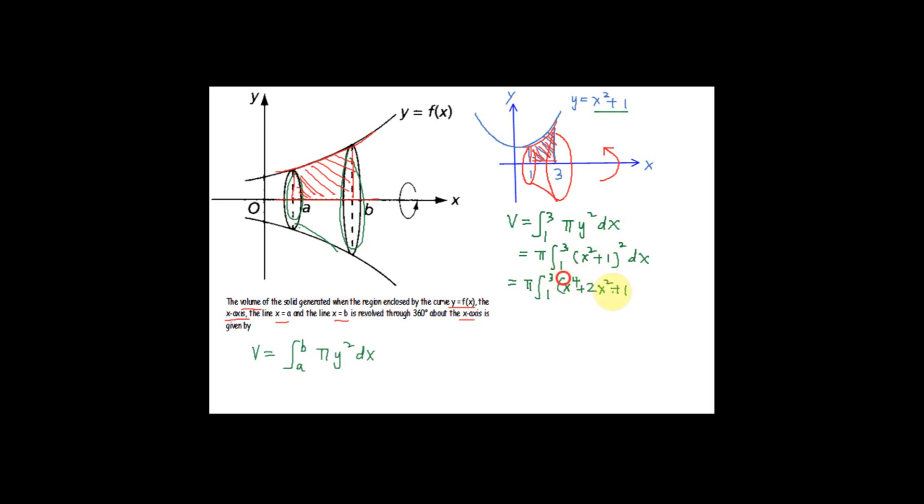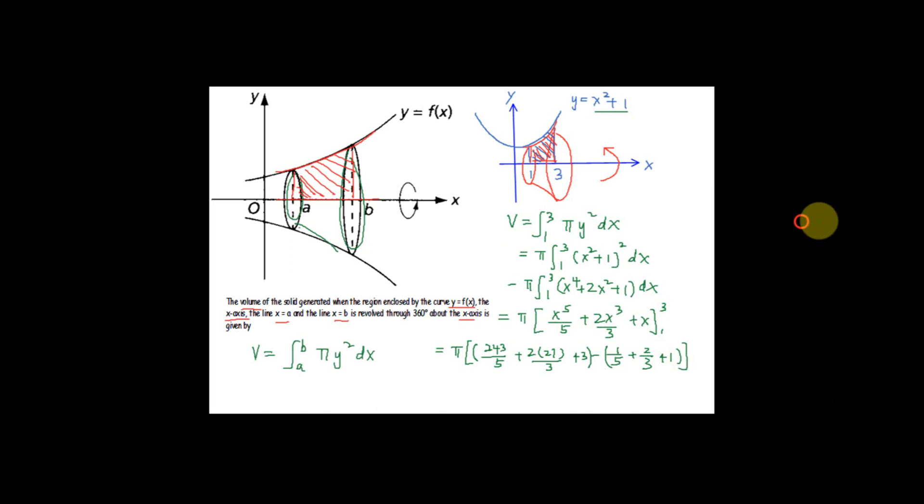Expanding (x² + 1)² gives x⁴ + 2x² + 1, so the integral becomes π ∫ from 1 to 3 of (x⁴ + 2x² + 1) dx. Integrating: π [x⁵/5 + 2x³/3 + x] from 1 to 3. Substituting 3: 243/5 + 2×27/3 + 3. Substituting 1: 1/5 + 2/3 + 1. This gives π (693/5 − 113/15).